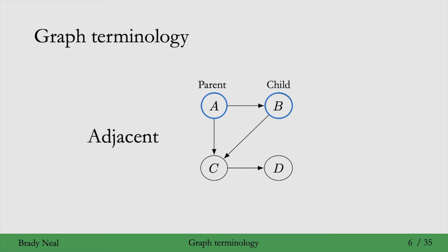Then we say that two nodes are adjacent if they are connected by an edge. So A and B are adjacent here. And they're not adjacent if they're not connected by an edge. So A and D are not adjacent in this graph.